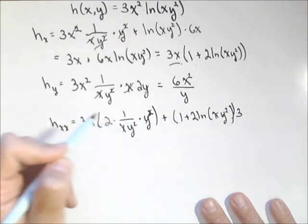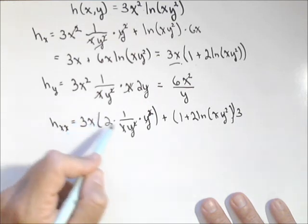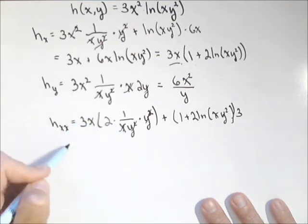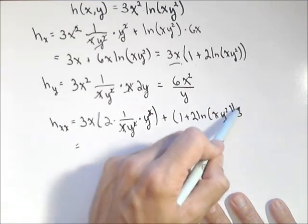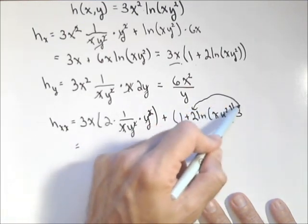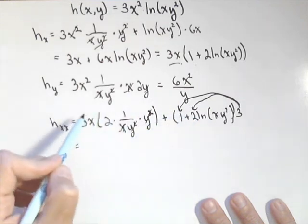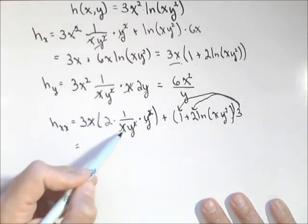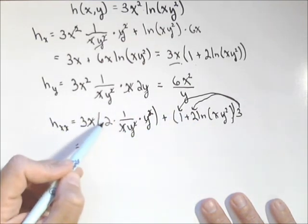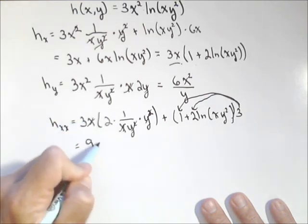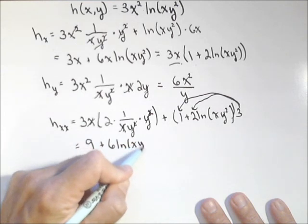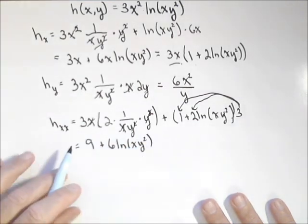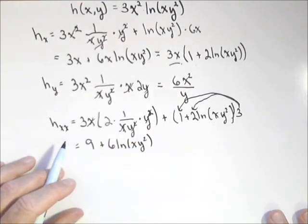Let's see if we can clean it up a little bit. We can cancel out those y squareds. Once again, we can cancel out that x. Now that three there will distribute to the two, giving us a six, and to the one. So that's three. And because we canceled out these two x's, this is a six. So we're gonna have nine plus six ln of xy squared. So it simplifies up pretty nice, even though it was a little bit ugly.